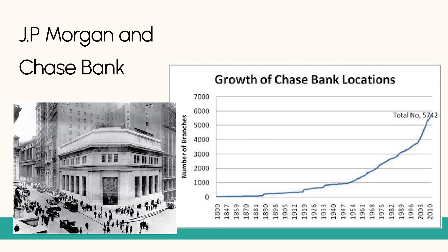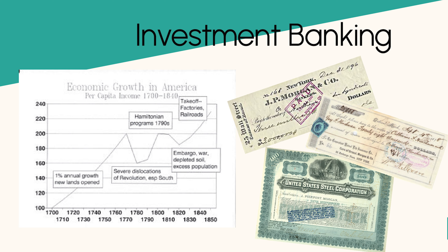J.P. Morgan was an American financier and banker who played a major role in the development of the U.S. economy during the late 19th and early 20th centuries. One of his lasting impacts was the consolidation of industries. Morgan was a key figure in consolidating various industries such as railroad, steel, and electric power. Through his efforts, he helped create some of the largest corporations in the world, including General Electric and U.S. Steel. These corporations had a significant impact on the U.S. economy, creating jobs and driving economic growth.